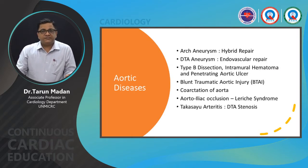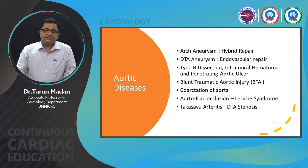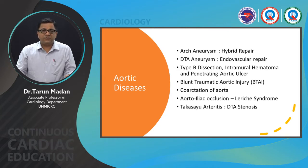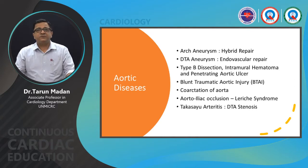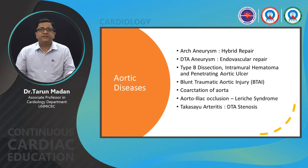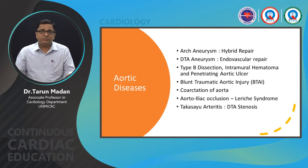Aorta is a complex disease starting from the ascending aorta up to the iliac bifurcation. The ascending aorta is a surgical disease and cannot be managed with endovascular intervention. From the arch, upper and lower thoracic aorta, and abdominal aorta, various disease manifestations occur: arch aneurysm, descending thoracic aorta aneurysm, type B aortic dissection, intramural hematoma, and penetrating aortic ulcer.